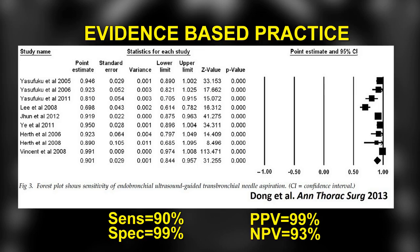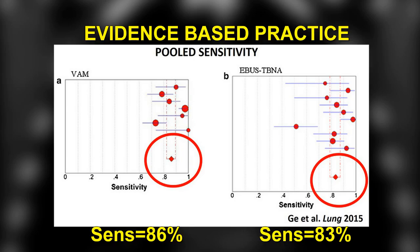The diagnostic yield of EBUS TBNA in the staging of non-small cell lung carcinoma was demonstrated in one meta-analysis involving over 1,000 patients to have an overall excellent pooled sensitivity, specificity, positive predictive value, and negative predictive value. A second meta-analysis comparing mediastinal lymph node staging of EBUS TBNA and mediastinoscopy found pooled sensitivities to be equivalent, with more procedural complications and fewer false negatives in the mediastinoscopy group.